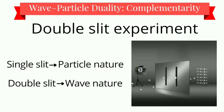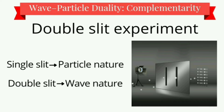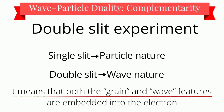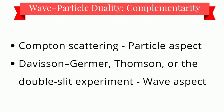As in the double-slit experiment, if we open a single slit, we observe its particle nature. But if we open both slits, we observe its wave nature. It means both particle and wave features are embedded in the electron. When we subject an electron to Compton scattering, we observe its particle aspect. But when we involve it in a diffraction experiment like the Davison-Germer experiment or Thomson double-slit experiment, we observe its wave aspect.